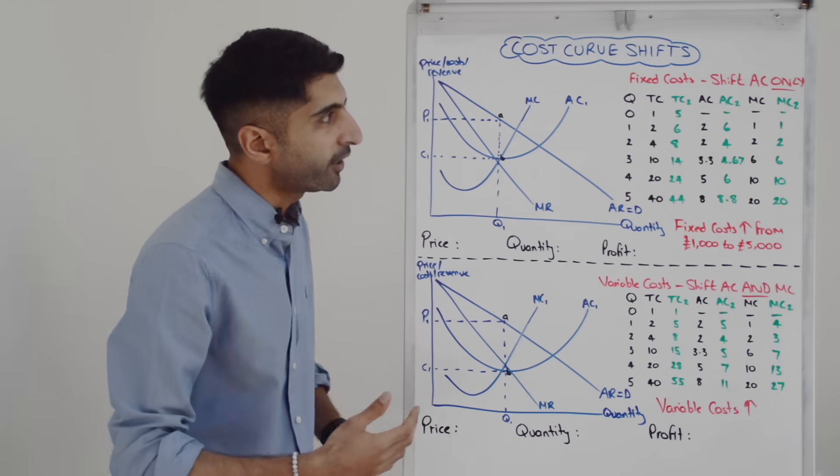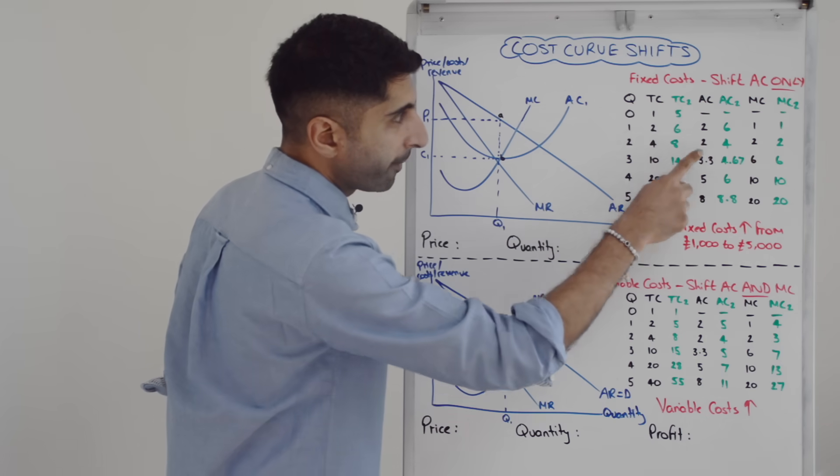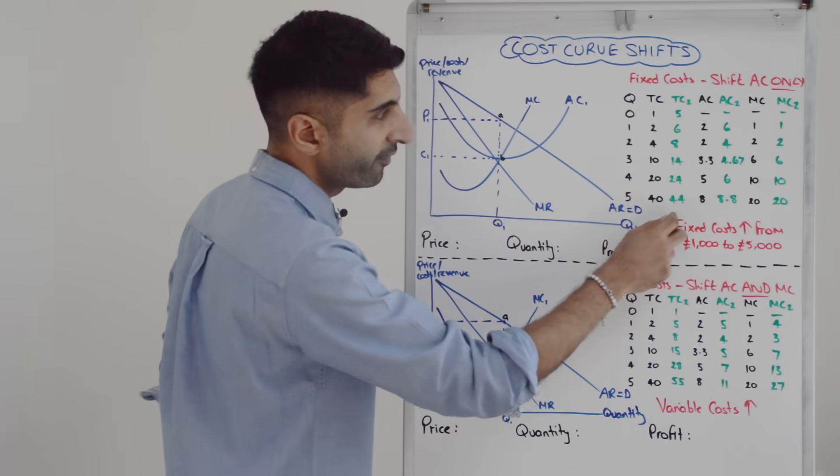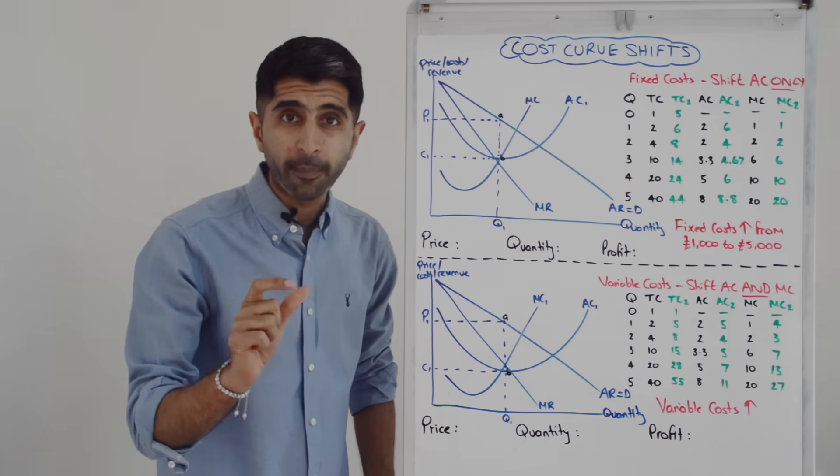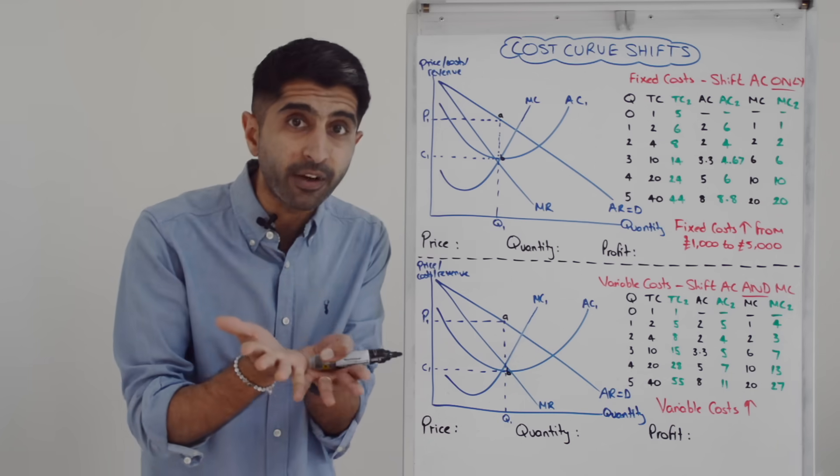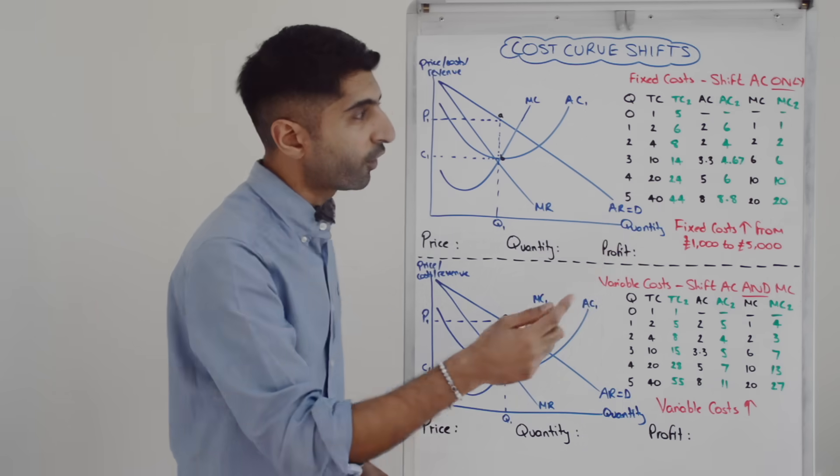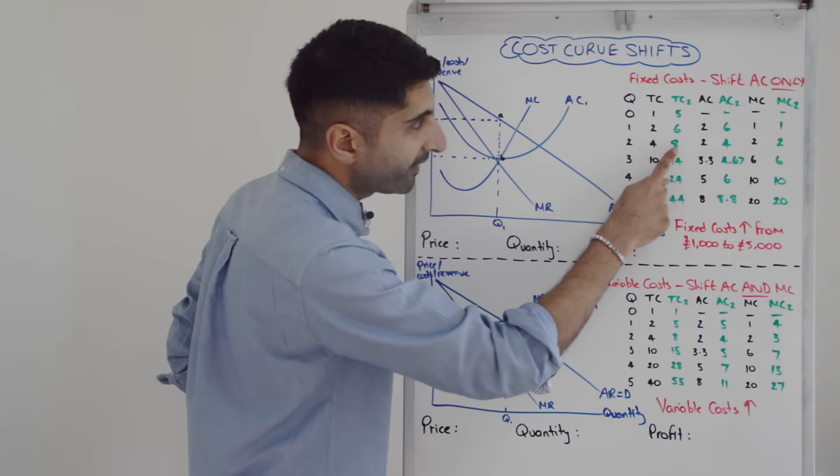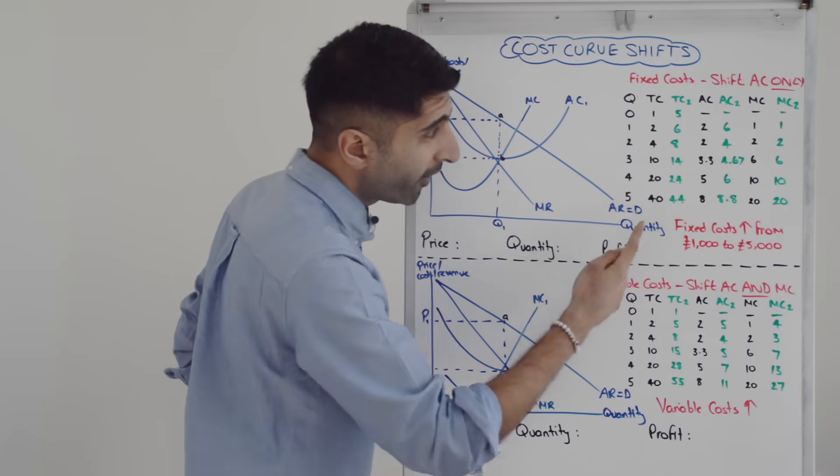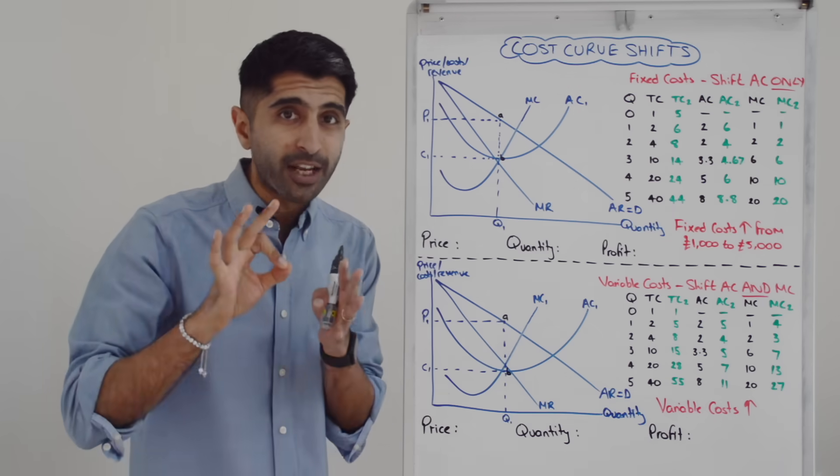With these new green numbers, we can work out the new average cost numbers and the new marginal cost numbers. So remember AC, dividing TC by Q. So six divided by one is six, eight divided by two is four, 14 divided by three is 4.67, 24 divided by four is six, 44 divided by five is 8.8. We can see average cost has increased. But look at marginal cost. Look at the change in total cost: 5 to 6 is 1, 6 to 8 is 2, 8 to 14 is 6, 14 to 24 is 10, 24 to 44 is 20. Marginal cost has not changed at all.